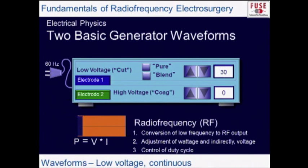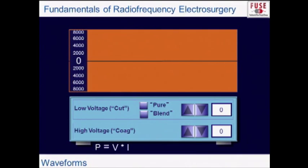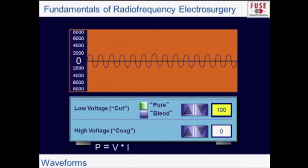There are basically two waveforms produced by generators. The first is the so-called cut mode — a low-voltage, continuous output. If we set it to pure cut at 30 watts and view it on an oscilloscope, we see a continuous sine wave. Turning it up to 100 watts gives the same sine wave with higher voltage — the peak-to-peak voltage increases. The voltage oscillates around zero, and the sum of the positive and negative peaks is the peak-to-peak voltage.